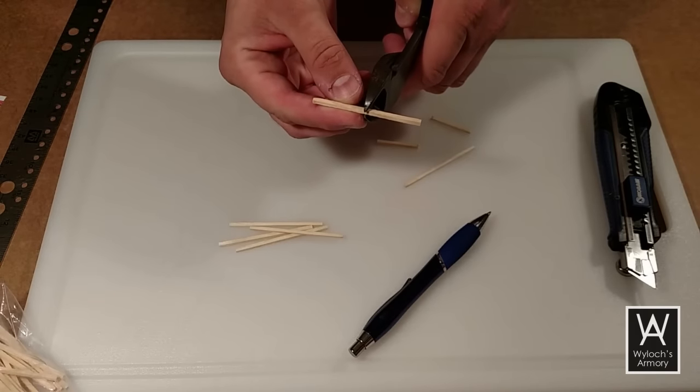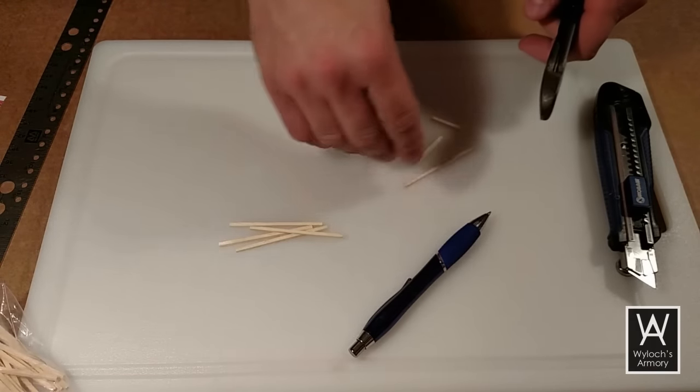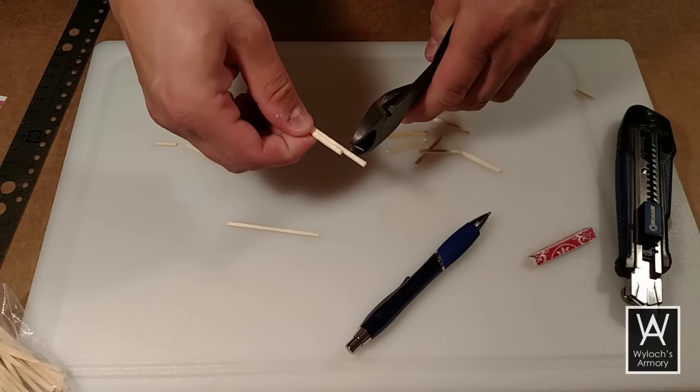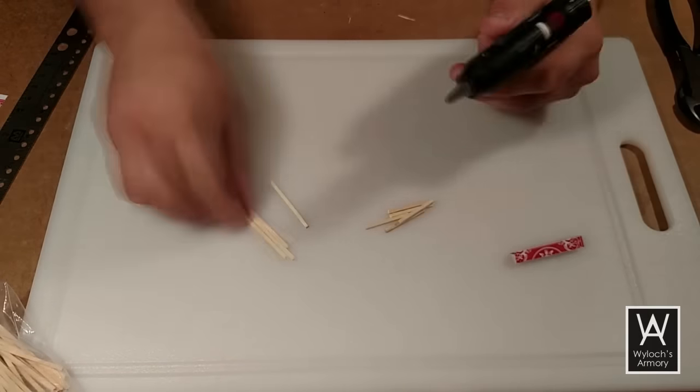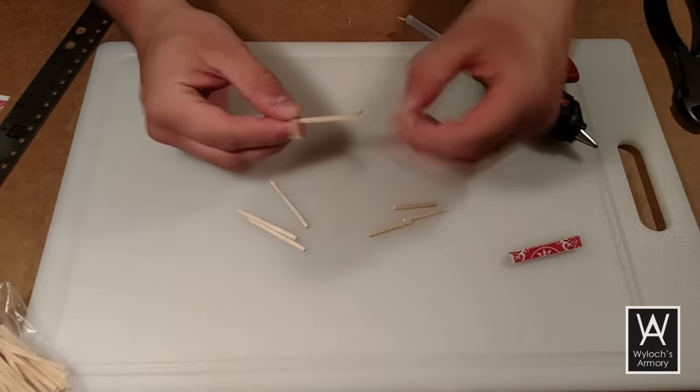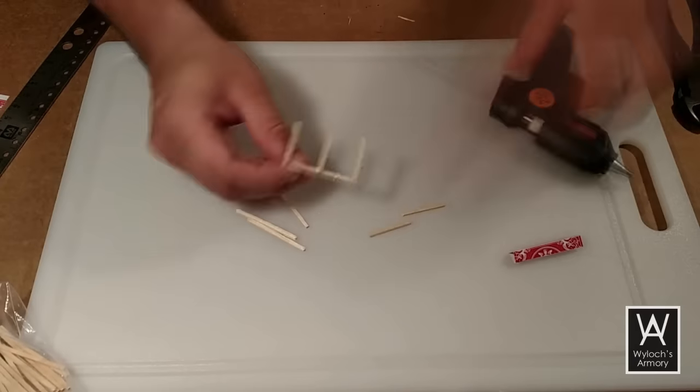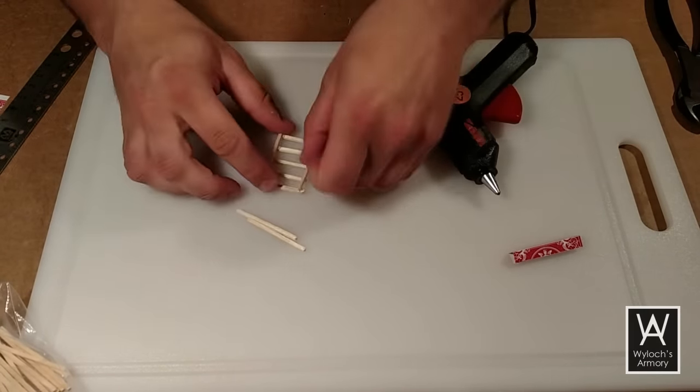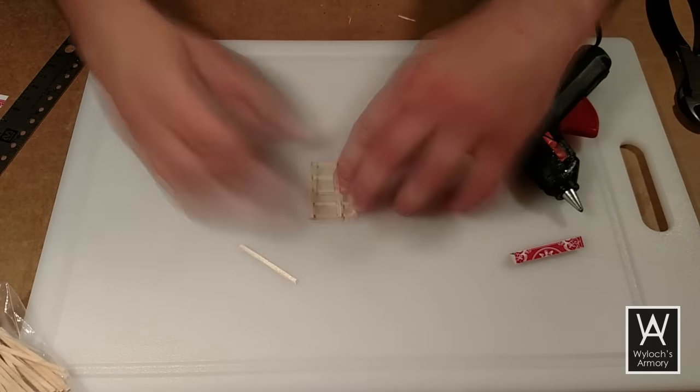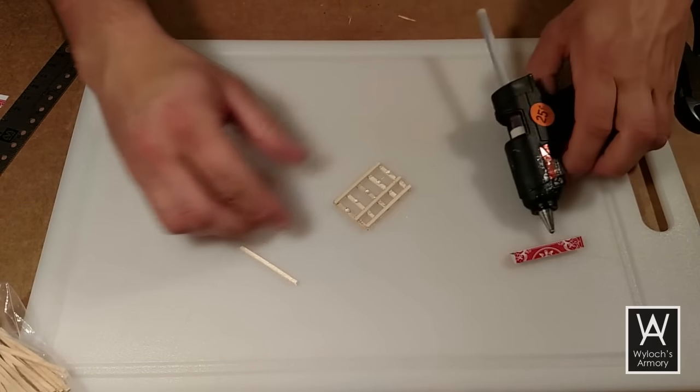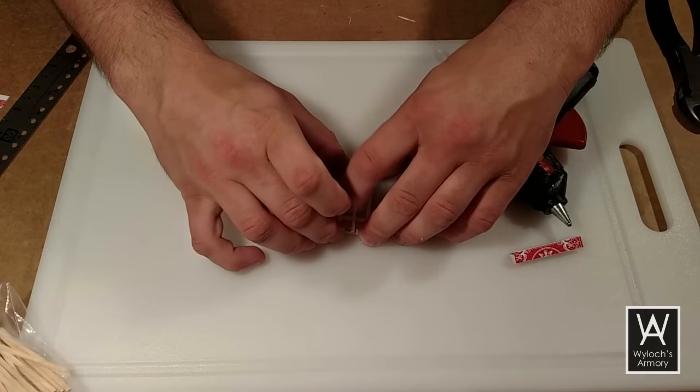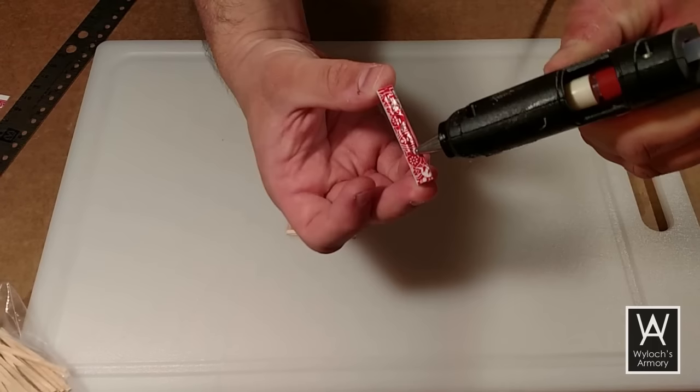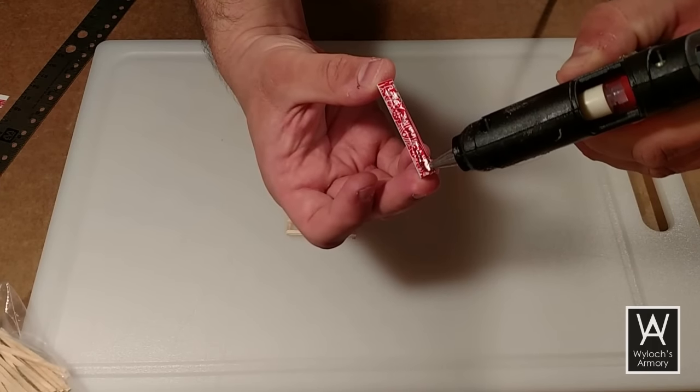Now we're going to take 4 matchsticks and cut them to 2 inches. And take 5 matchsticks and cut them to about 1 and 1/4 inch. And so we'll lay out the 4 long ones, and just glue the short ones to them perpendicularly. Make sure you space them out evenly. Take this whole assembly, and hot glue it to the wall clip.